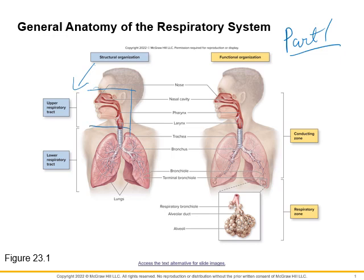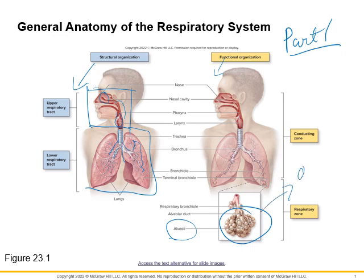We're going to go through all of the upper respiratory structures, like the nasal cavity, the pharynx, and the larynx. Then we're going to move to the lower respiratory tract and talk about the trachea, the bronchi, and the bronchioles. On the functional organizational chart, they're talking more about how we're exchanging gases. We'll come back and discuss the alveoli and exactly what's happening during oxygen and CO2 exchange.